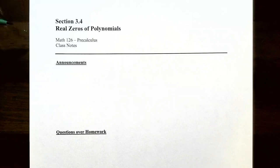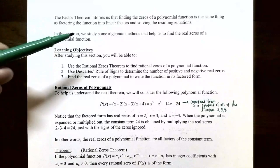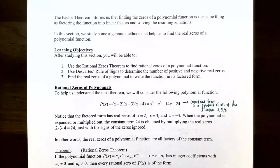Hi everyone, it's Professor Permanent and in this video we're going to talk about real zeros of polynomials. From the previous video we talked about how the factor theorem helps us find the zeros of a polynomial function, because finding the real zeros gives us factors for the polynomial. We can have the function factored into linear factors and then solve the resulting equations to find the real zeros. In this section we're going to study algebraic methods, specifically the rational zeros theorem, and also how to find the real zeros to write the function in its factored form.